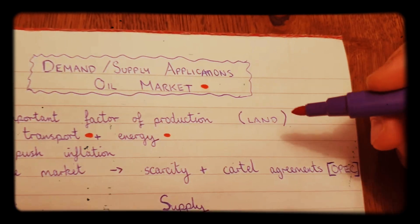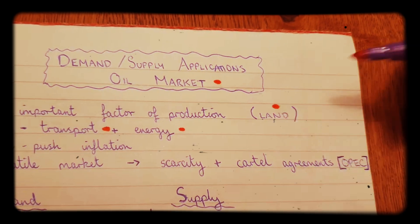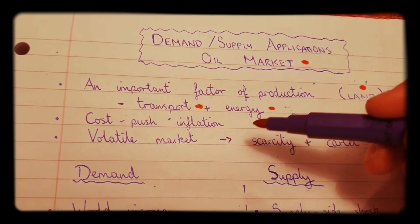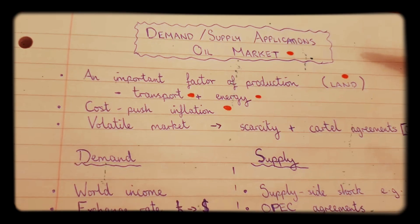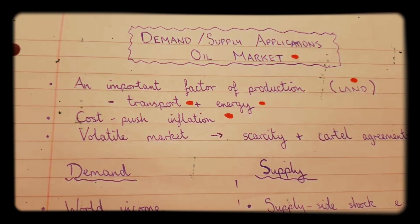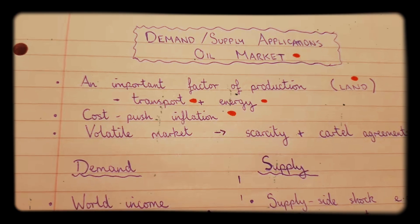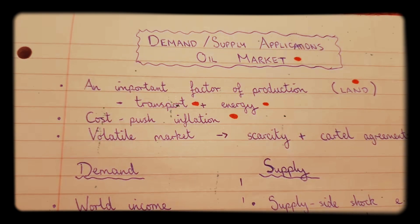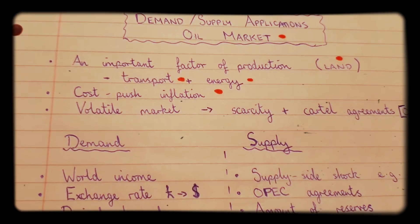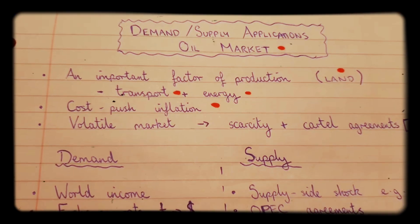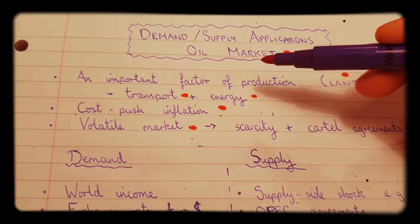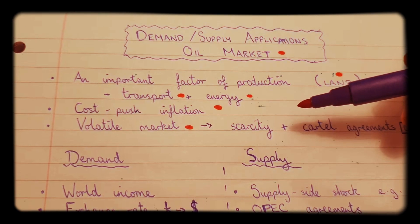In terms of the factors of production, you would say that oil comes under land, because it's a natural resource. Oil can lead to cost-push inflation in an economy because it can increase the cost of production for many firms, and therefore this extra cost of production is passed on in the price of the products that firms sell to customers. It's also a very volatile market, so prices can go up and down quite often.